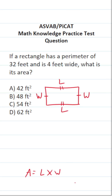Let's talk about how to find the perimeter of regular polygons. You simply add all of its sides. So to find the perimeter of this rectangle, it's going to be width plus length plus width plus length.